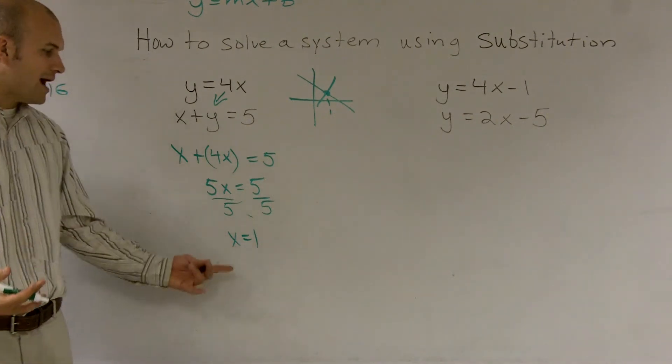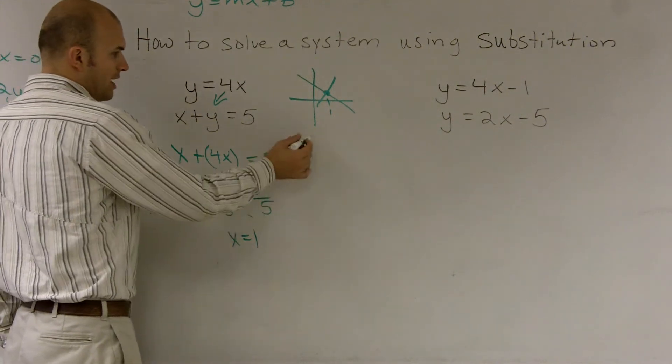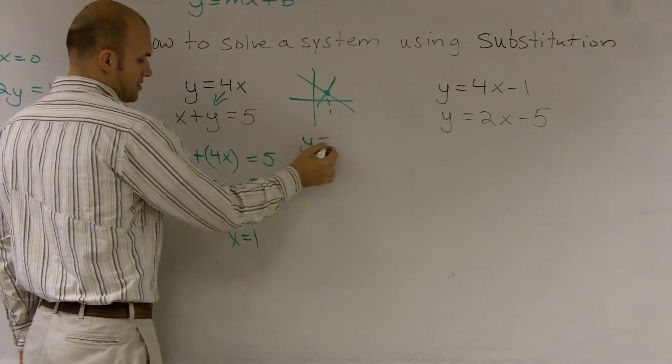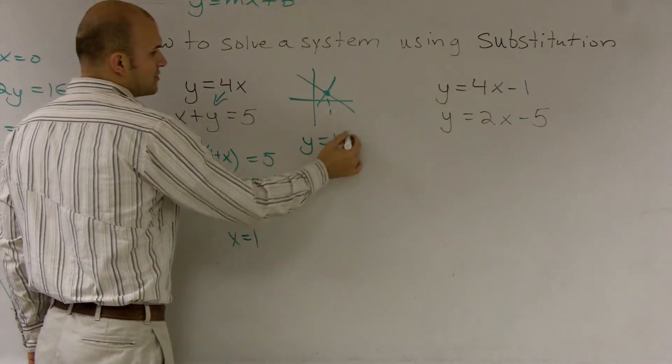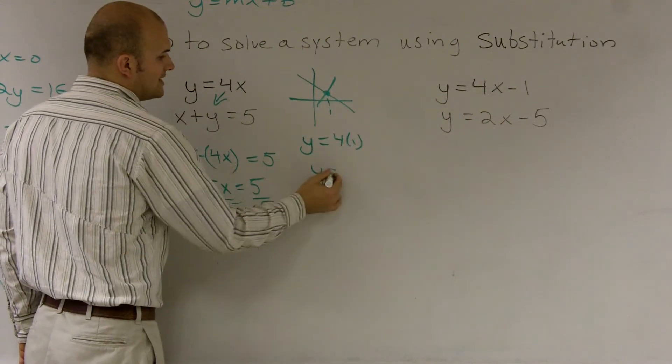Now I need to find out, well, what is the y value? So to do that, I can just plug in when x equals one, so I get four times one, y equals four.